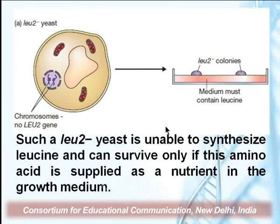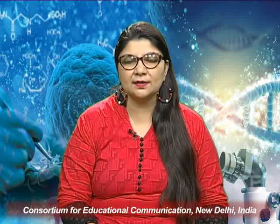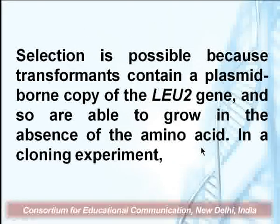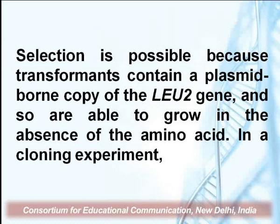One can select the presence of a YEP-13 vector molecule this way. Such a leucine-2-minus yeast is unable to synthesize leucine and can survive only if the amino acid is supplied in the nutrient medium. Auxotrophic mutants require the presence of certain essential amino acids in the medium to grow. Using leucine-2-minus yeast as a host, when the YEP vector is introduced it becomes leucine-2-plus, and can be selected by growing on minimal medium. The selection is possible because transformants contain a plasmid-borne copy of the leucine-2 gene and are able to grow in the absence of the amino acid.